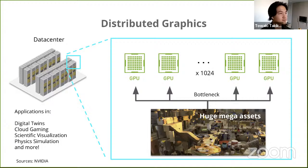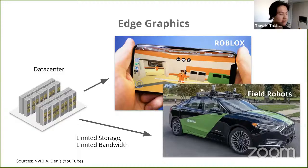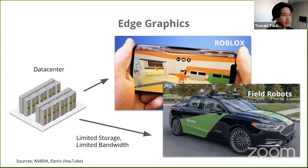This is also a huge problem for edge graphics workloads, like a game such as Roblox, where you have to stream assets on demand onto your mobile device over a limited bandwidth mobile connection. It's also a problem for field robotics and autonomous driving, where robots need to reason about their 3D environment. In these scenarios, you have very limited storage on devices and even more limited bandwidth, making large gigabyte meshes a serious problem.